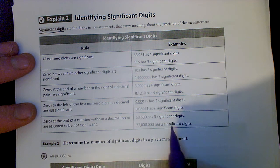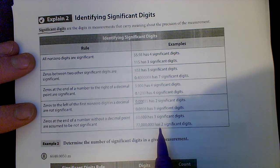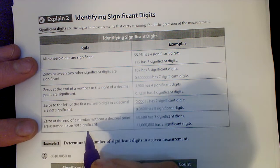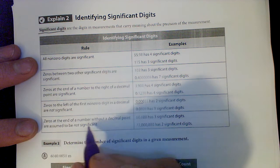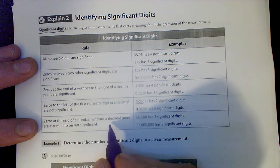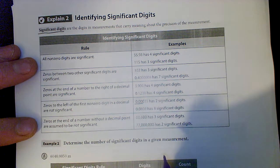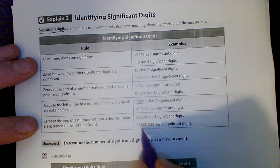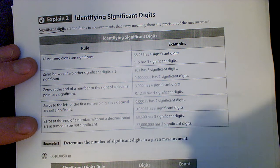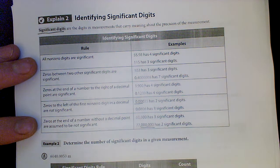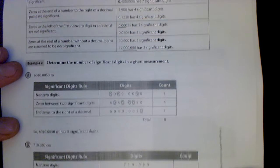Zeros to the left of the first non-zero digit in a decimal are not significant because they are to the left of that first non-zero digit. Zeros at the end of a number without a decimal point are assumed to be not significant - so a number like that with trailing zeros and no decimal is just two significant digits.